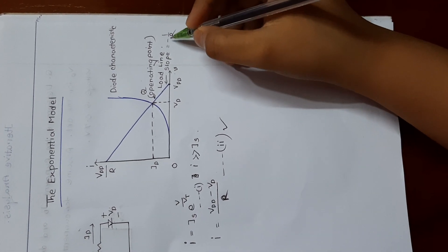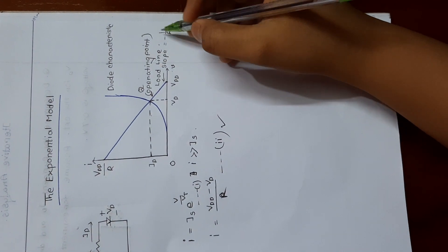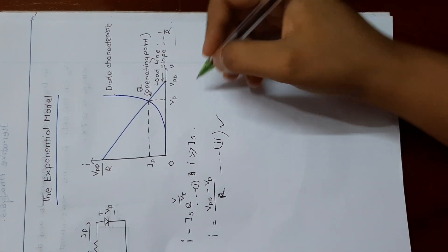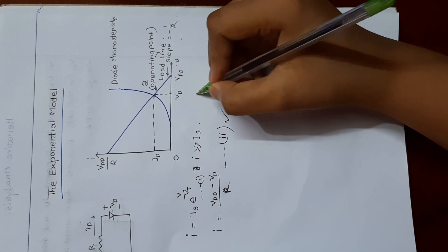So the slope of this line is minus 1 by R. So this is how we can plot a graph using this.